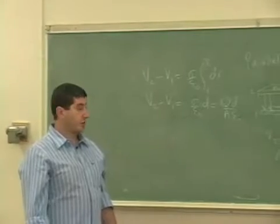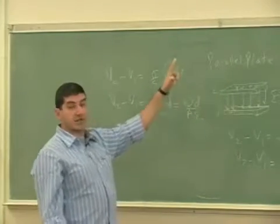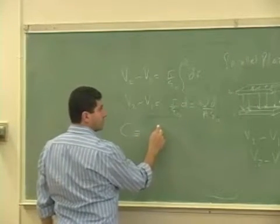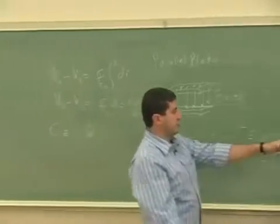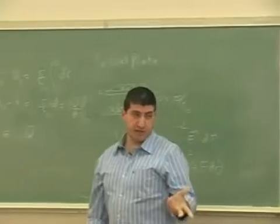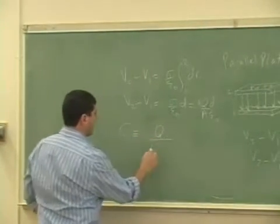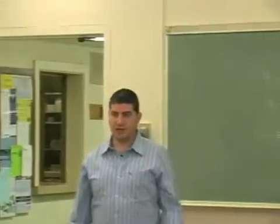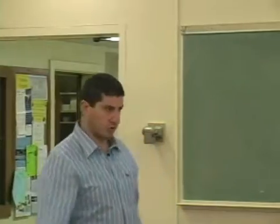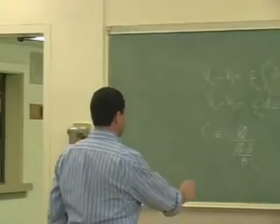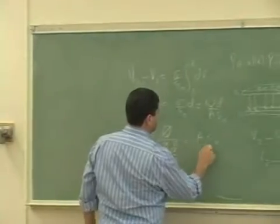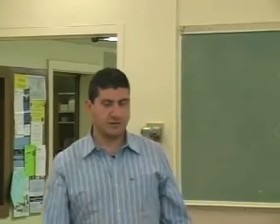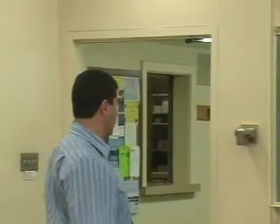Now if I want to calculate the capacitance of the capacitor, I use the definition: I divide the charge on either plate by the potential difference between the plates. The Q and Q cancel and you get A times epsilon-zero over d — which is the formula we used for our third lab, the capacitance lab. That was the formula: C = Aε₀/d.